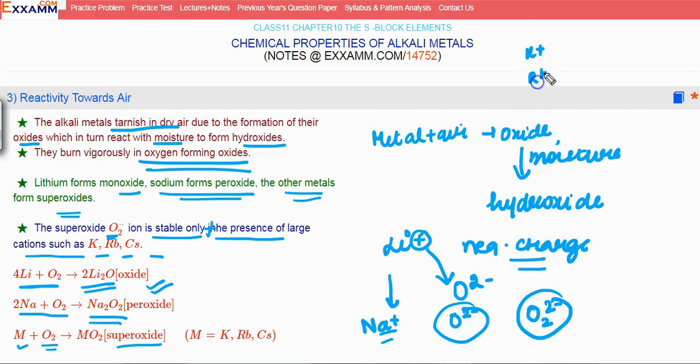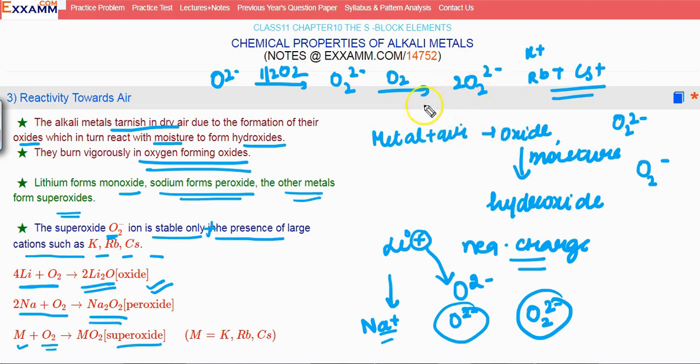If you go to K+, Rb+, or Cs+, their size is much larger, so the positive charge influence becomes even less. So they cannot prevent even the peroxide from combining with further oxygen. So it goes to another oxygen and O2- is formed. So the peroxide converts and reacts with further oxygen to give you superoxide.